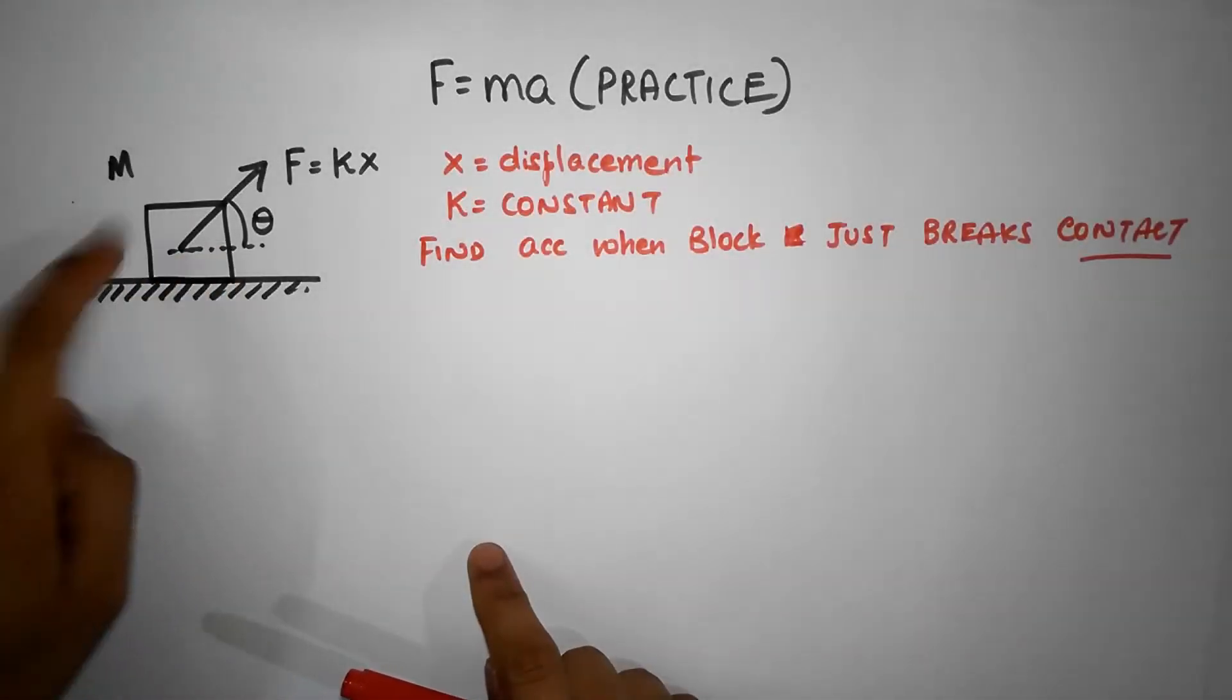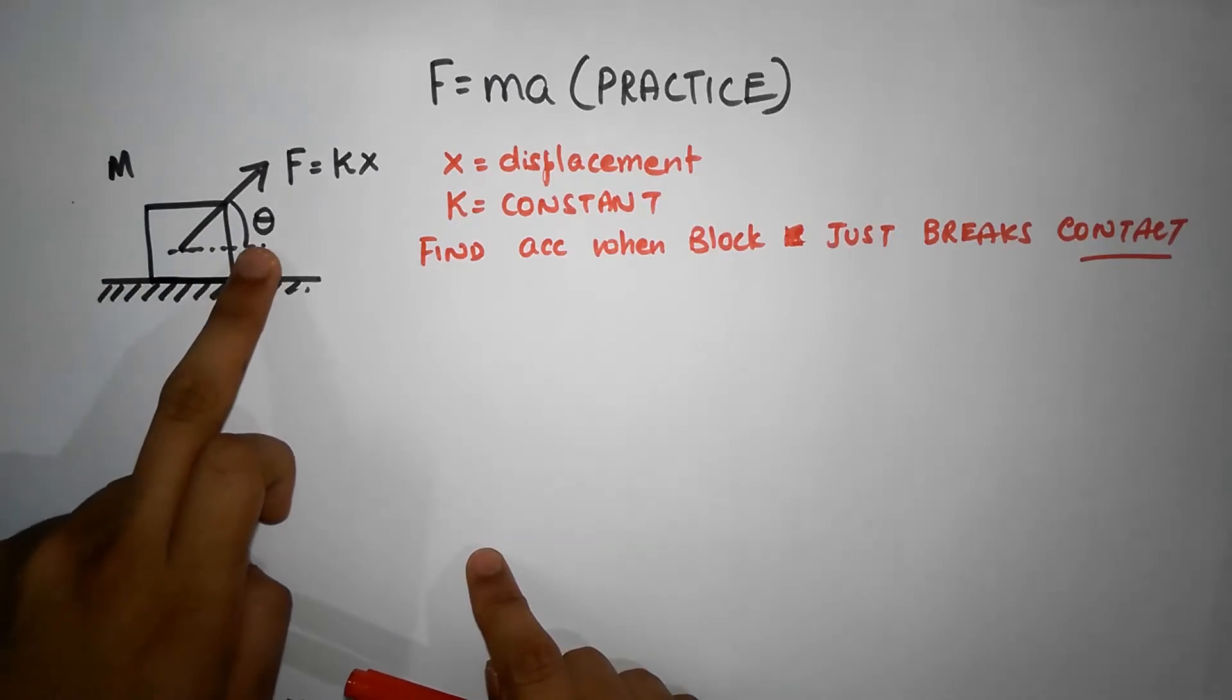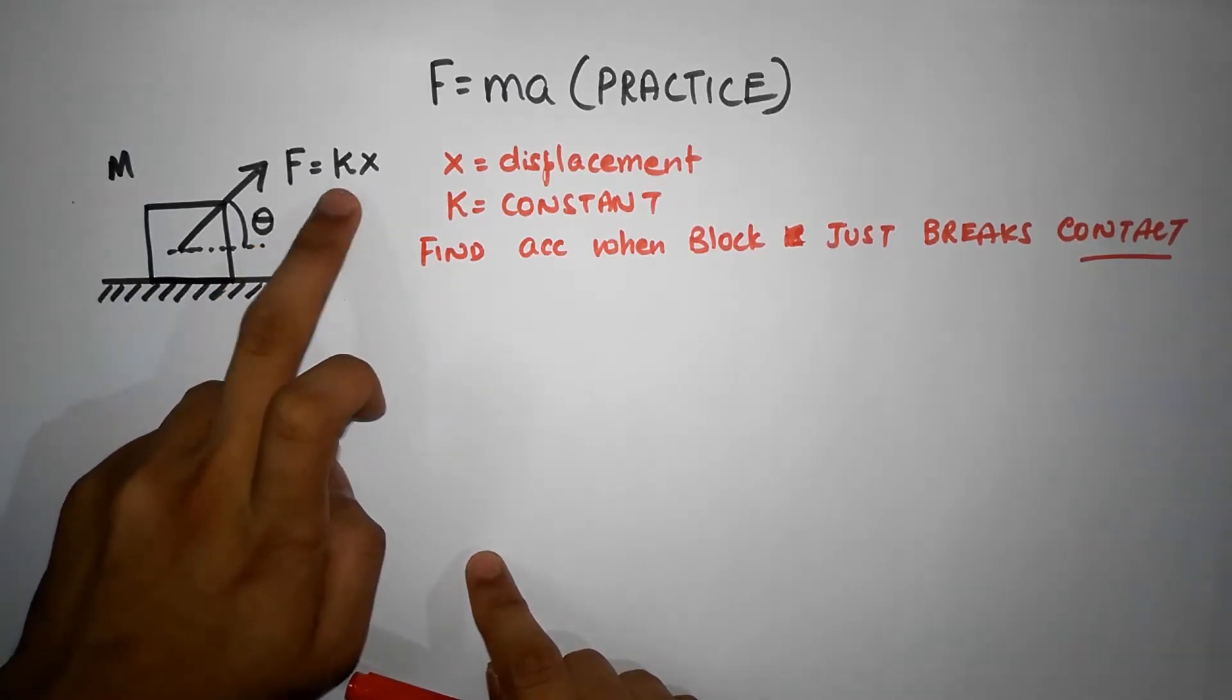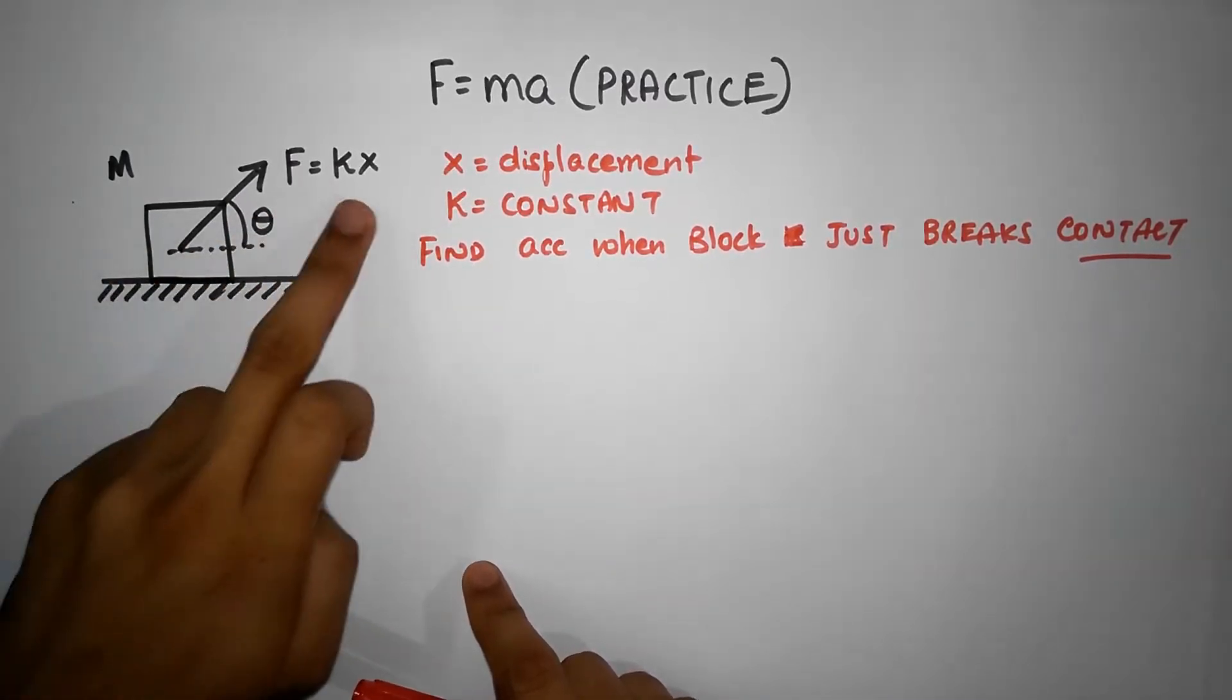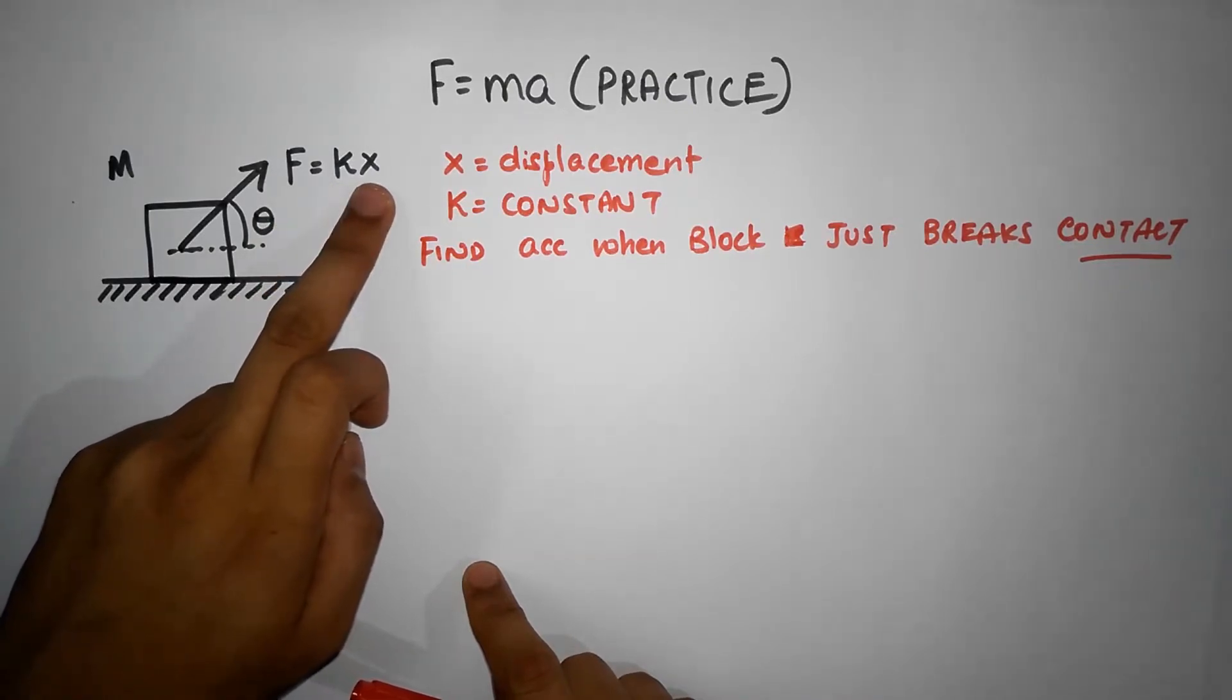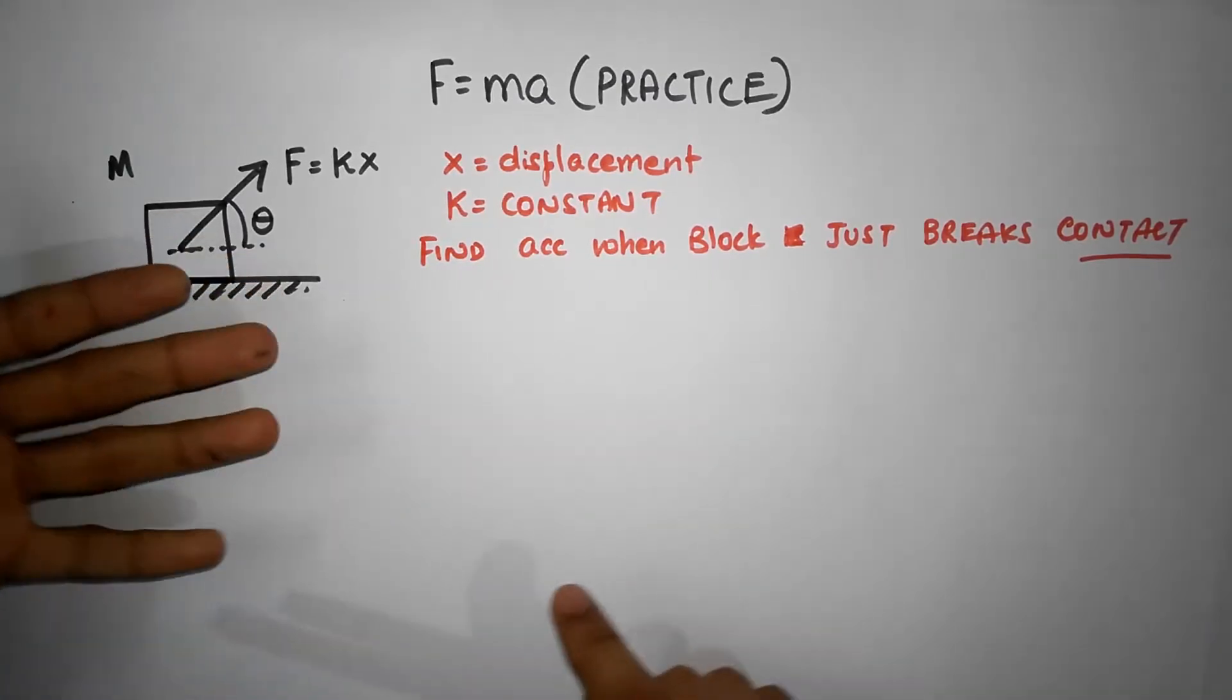Here we have a block on which there's a force acting at an angle theta, and this force is given as a function of x, where x is the displacement of the box. The force equals some constant k times x. That means as the block gets displaced, the initial velocity of the block is zero, so as the block gets displaced, x value increases and the force value also keeps increasing.